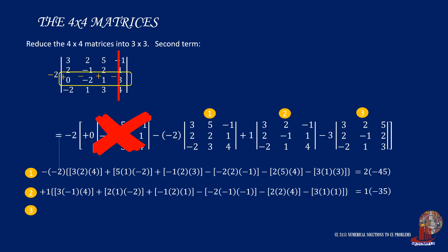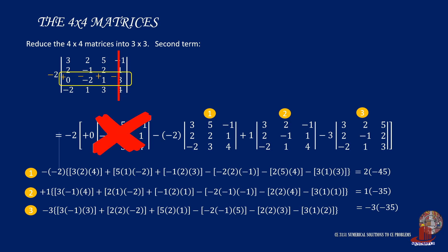The last term has a determinant with diagonals consisting of 3, negative 1, and 3, then 2, another 2, and negative 2, and also 5, 2, and 1. Its antidiagonals have negative 2, negative 1, and 5, also 2, 2, and 3, and then 3, 1, and 2. They can be simplified into negative 35. So multiply the respective scalars and have a total of negative 20. But then again, the whole second term has another negative 2 scalar, so negative 2 multiplied by negative 20 is positive 40.